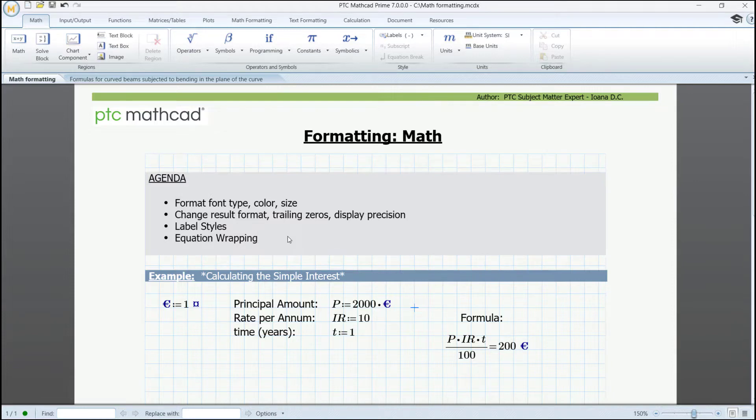The first example shows the terms for calculating a simple interest. We have the principal amount, the rate per annum, and the time in years. And then here on the right, we have the most basic formula for calculating it. We don't need advanced calculations in this video. We are just going to see how to present the information and how to format the math regions so that they look nicely when we want to present a report, document, or presentation, for instance.